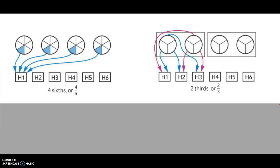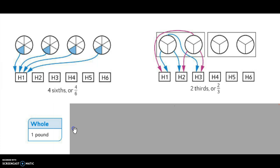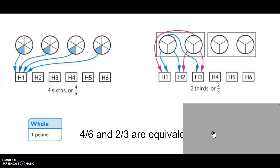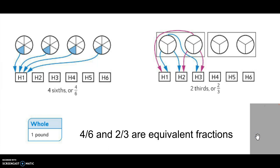So in our two examples, we have the hikers receiving four-sixths of a pound, and two thirds of a pound. Do four-sixths and two thirds refer to the same whole? They do — the whole is one pound of trail mix. Are four-sixths and two thirds equivalent fractions? Yes, they are. We divided into different size parts, but the hikers are still sharing four pounds of trail mix equally. So four-sixths and two thirds are equivalent fractions.